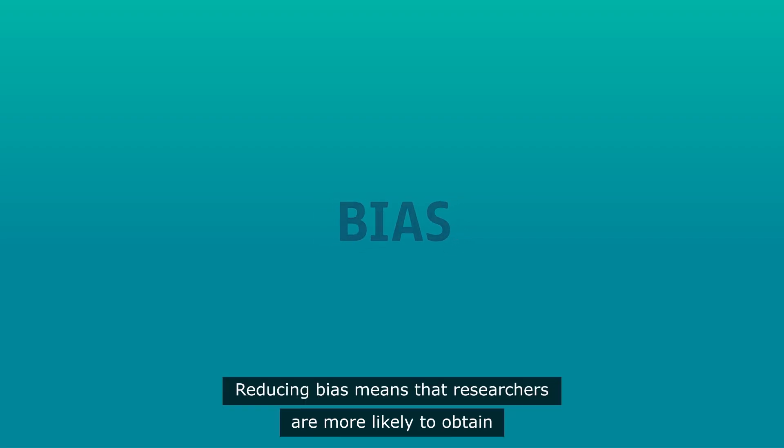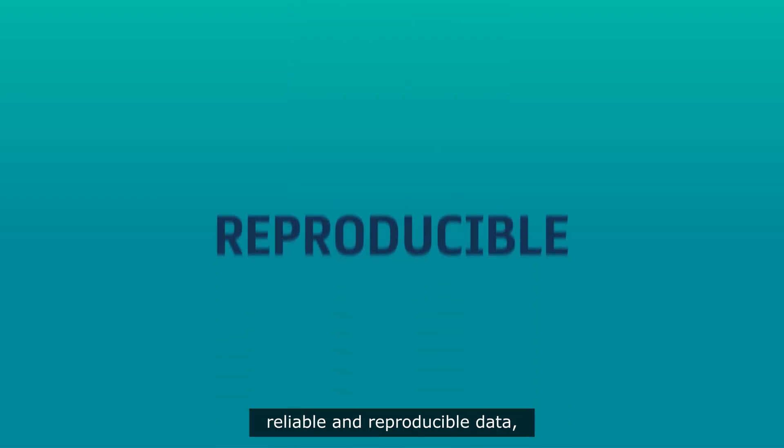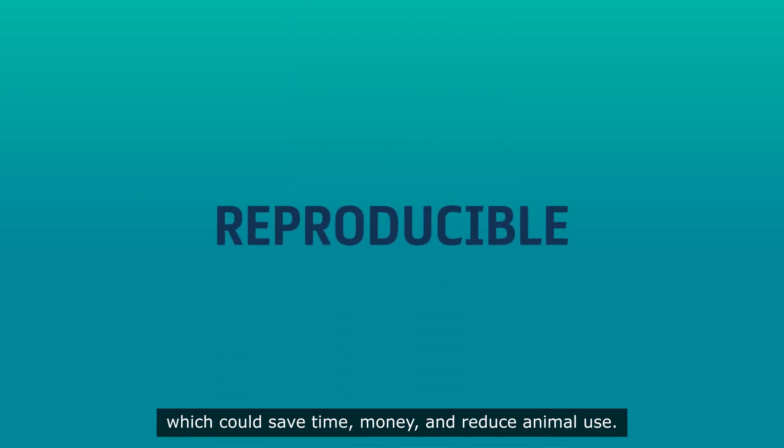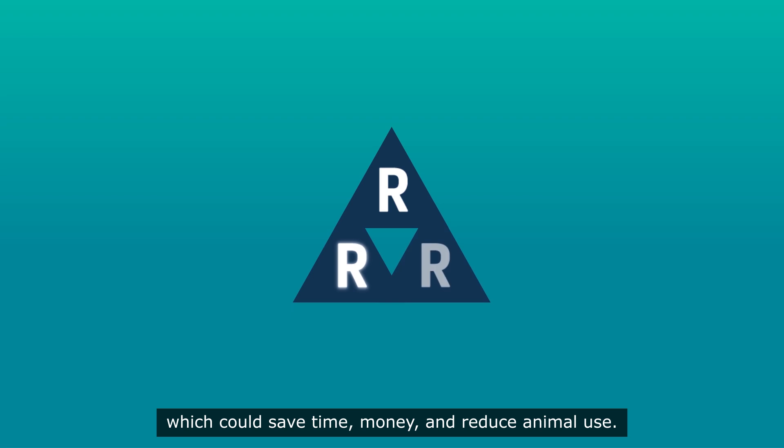Reducing bias means that researchers are more likely to obtain reliable and reproducible data, which could save time, money, and reduce animal use.